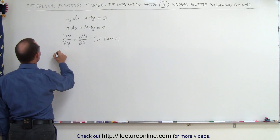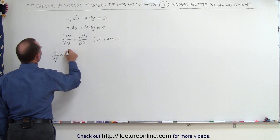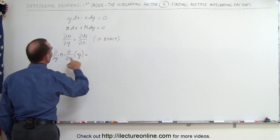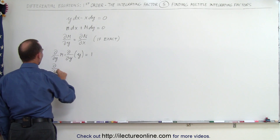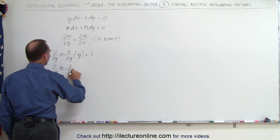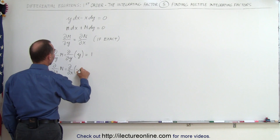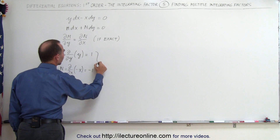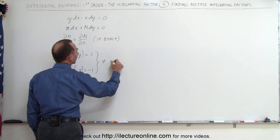Let's see if this equation is indeed exact. We take the partial with respect to y of M, which is the partial with respect to y of y, and we get 1. If we take the partial with respect to x of N, which is the partial with respect to x of negative x, that equals minus 1. They're not the same, therefore the equation is not exact.